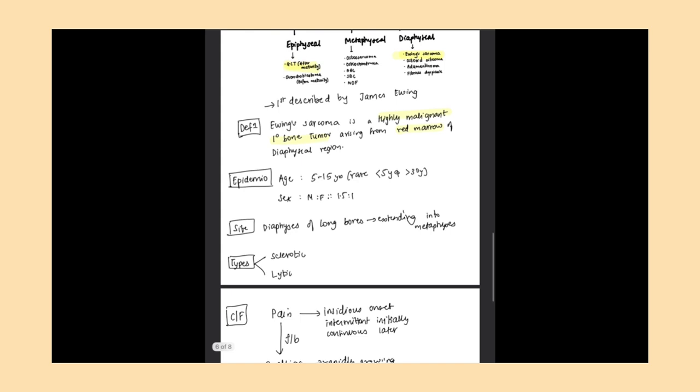Regarding epidemiology, it occurs in 5 to 15 years of age. It is very rare under 5 years and above 30 years. The male to female sex ratio is 1.5:1, which means slight male predilection. The site is the diaphysis of long bones extending into the metaphysis.